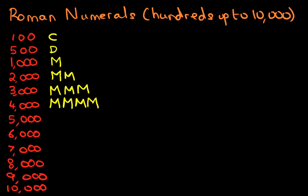Now what about five thousand? Well, five thousand is a new symbol — it's a V with a dash on top. I'm just going to circle that to make sure it's more pronounced. Five thousand is a V with a dash on top. The V represents five, and the dash on top represents the one thousand, so therefore that is five thousand.